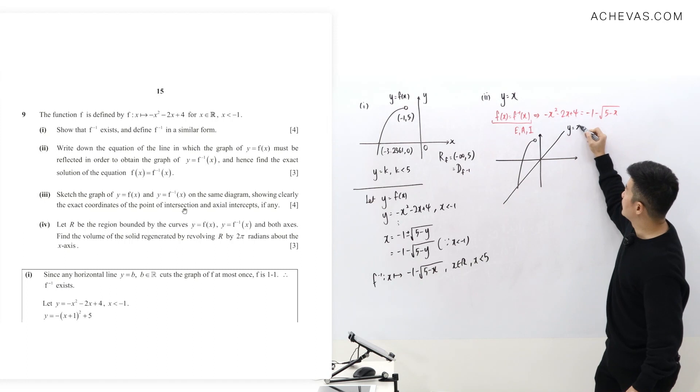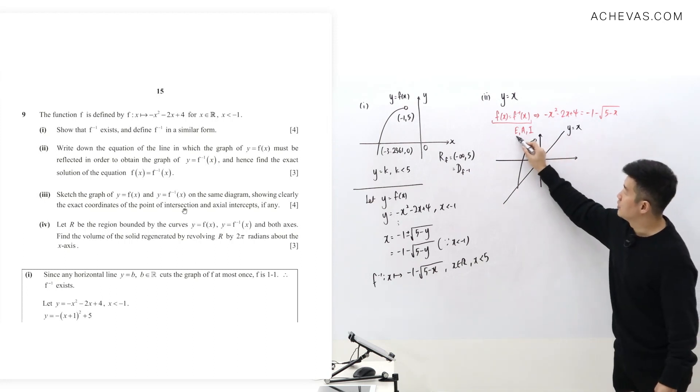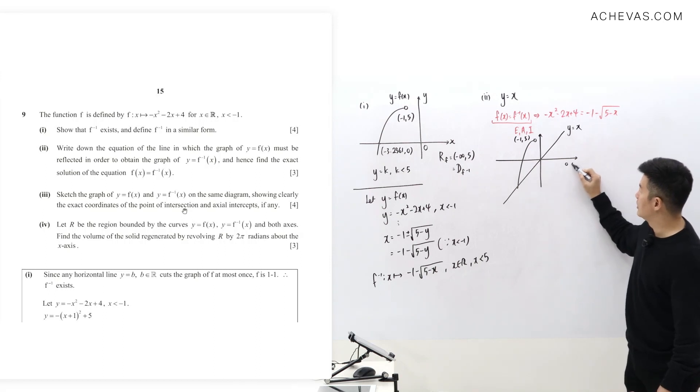So this point which is (-1, 5) will become a point maybe here (5, -1). It looks like (5, -1). So from here it's going to be connected to here.